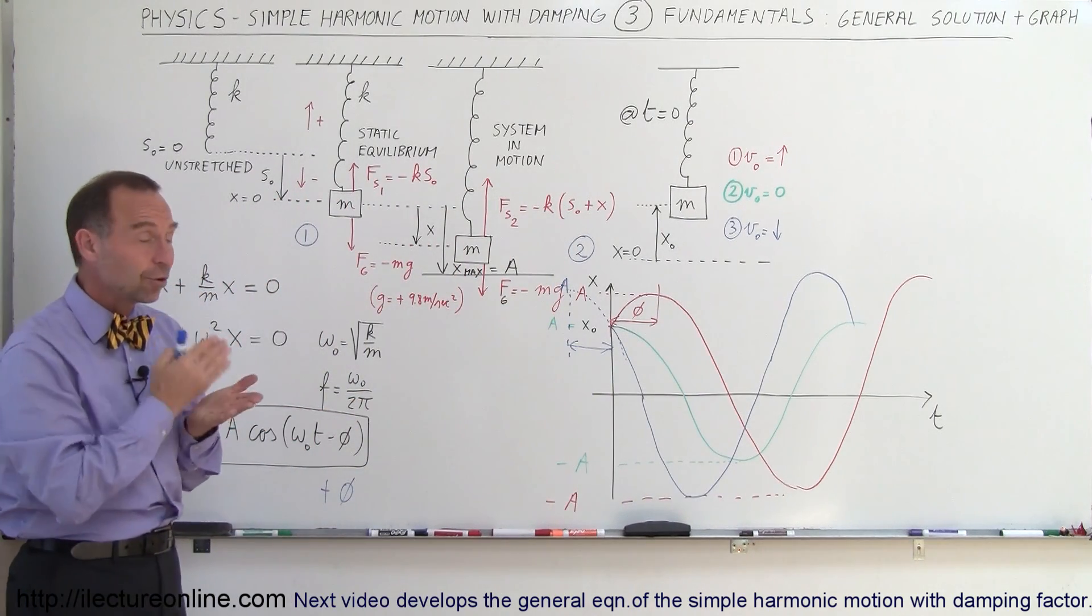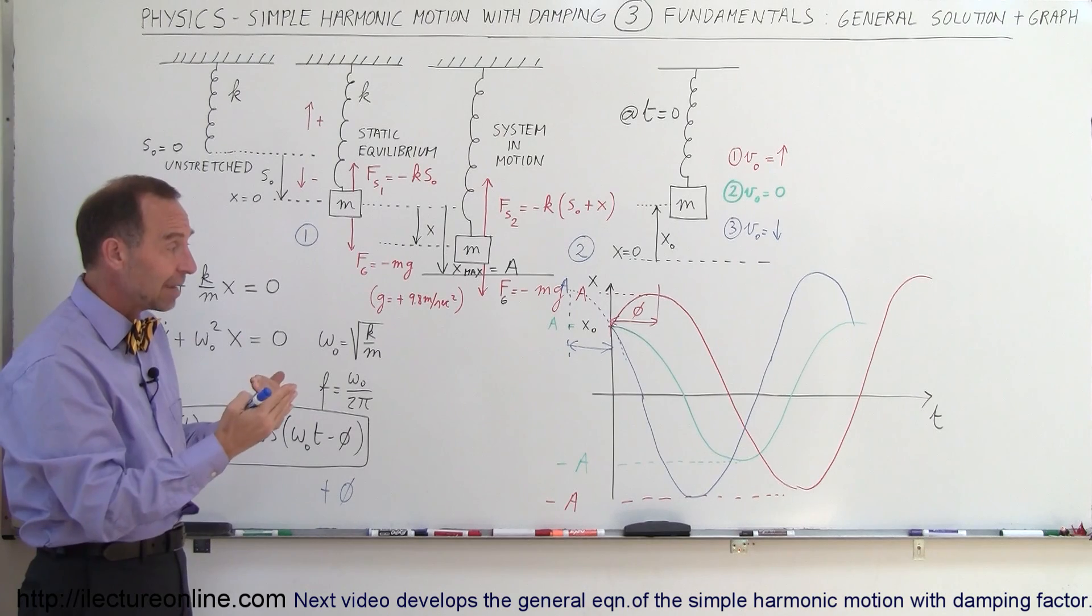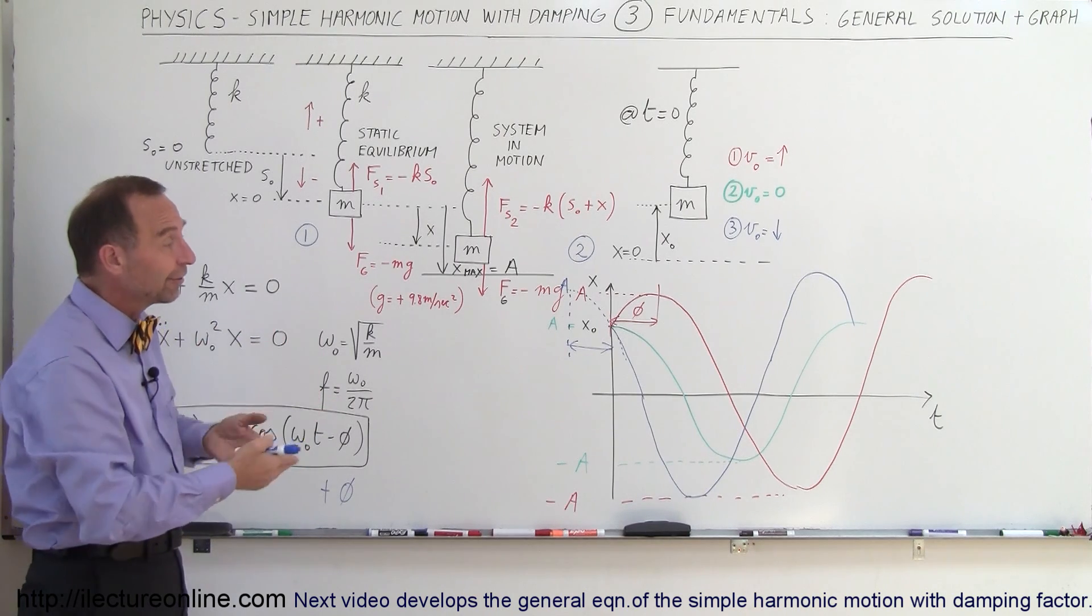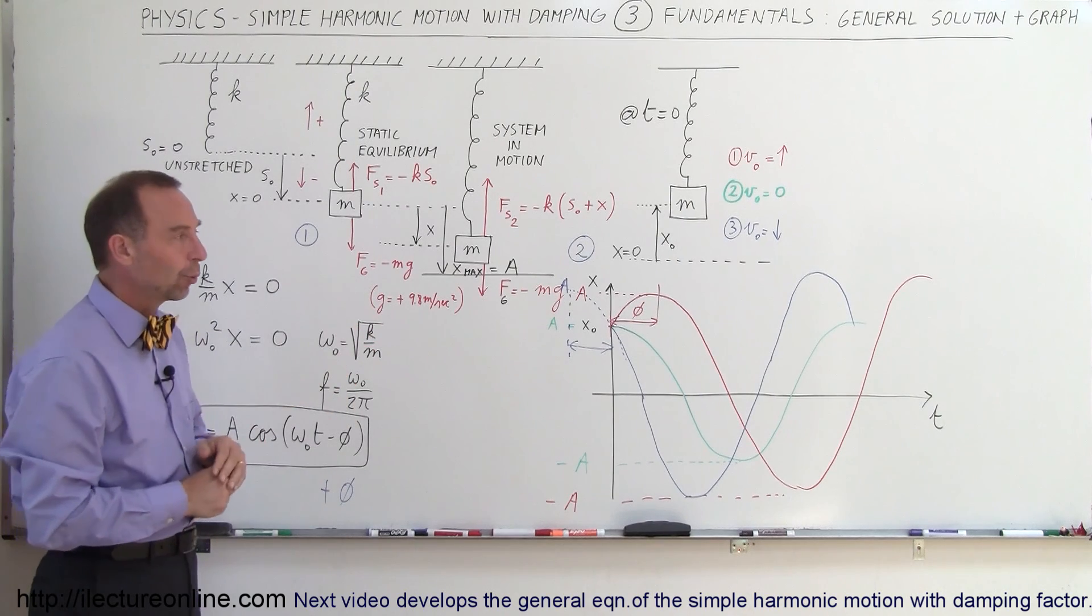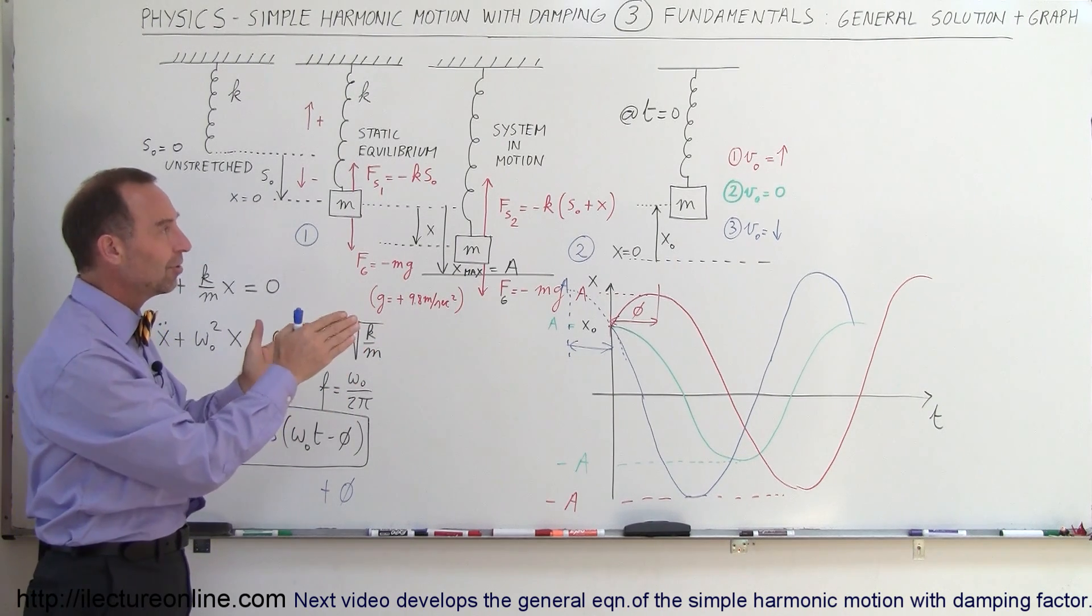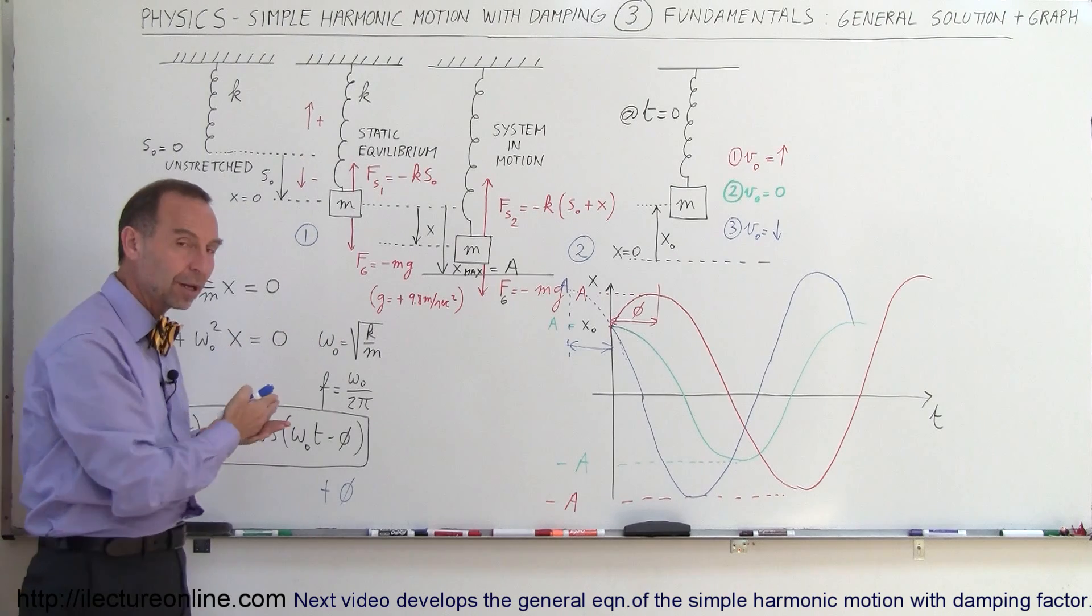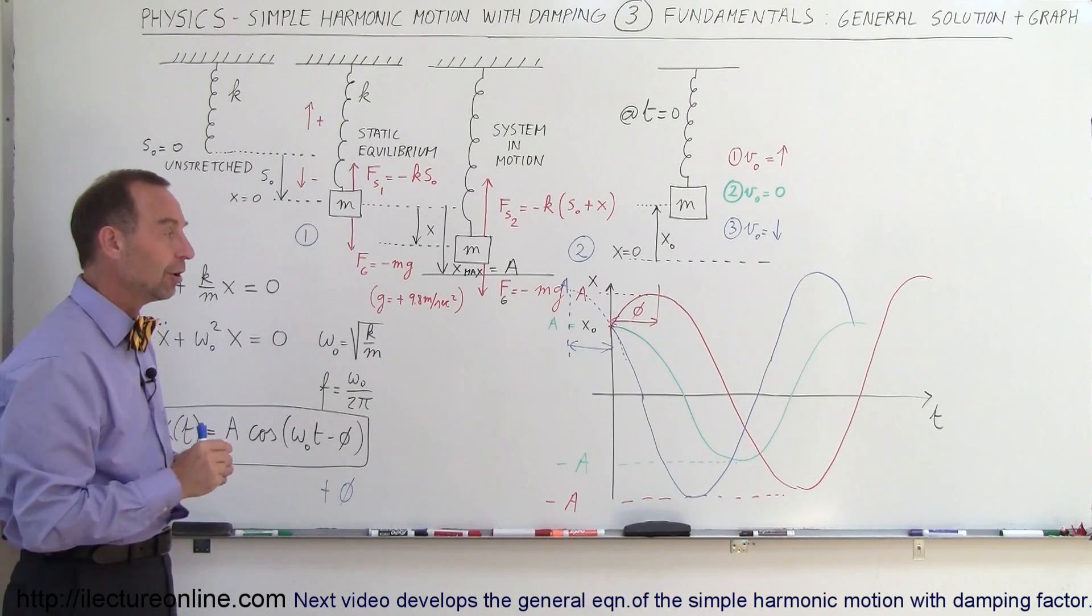Notice in all three cases the omega, the frequency is exactly the same, it's just the starting point is different, and for the ease of drawing, the amplitude in each case was different as well. So there's a graphical representation of the general solution of simple harmonic motion with no damping factor involved.